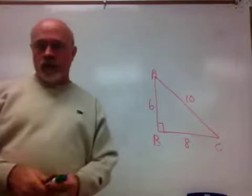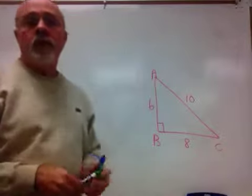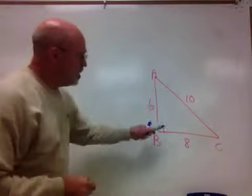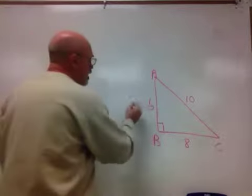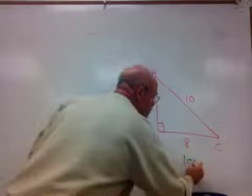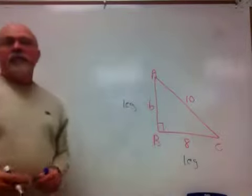Okay, on the board we have a right triangle. It has sides of 6, 8, and 10. The two sides that make up the right angle, the 6 and the 8, are called the legs of the right triangle. Every right triangle has two of them, and they're the sides that make the right angle.